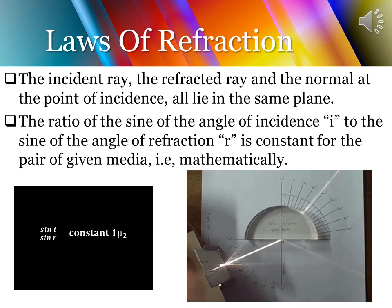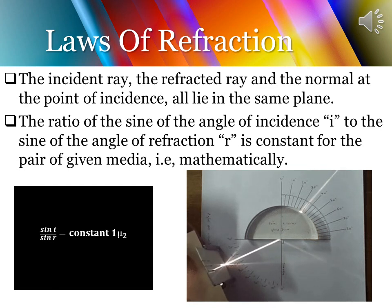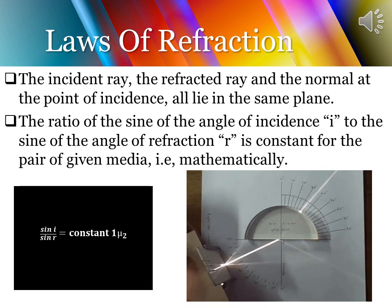The second law of refraction states that the ratio of the sine of the angle of incidence to the sine of the angle of refraction is constant for a pair of given media. Mathematically, sin i / sin r = constant, and that constant is known as the refractive index, written as ¹μ², which represents the refractive index of the second medium with respect to the first medium.